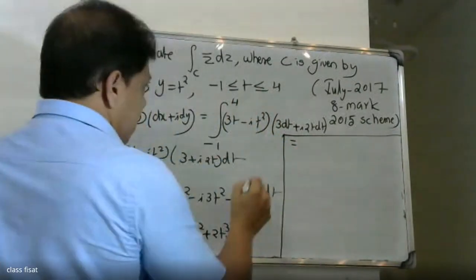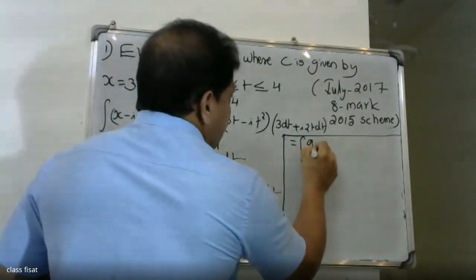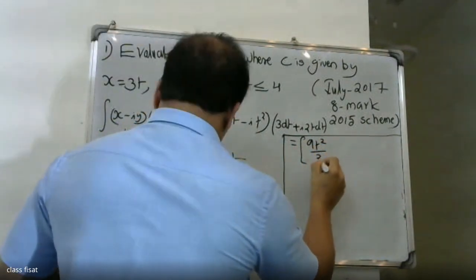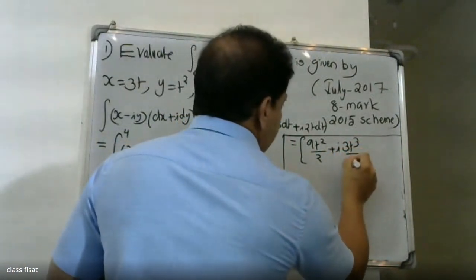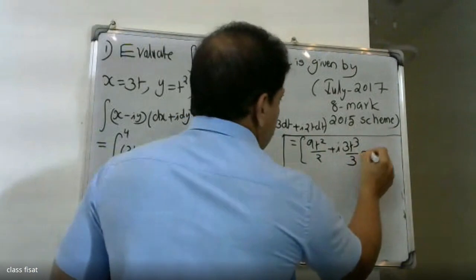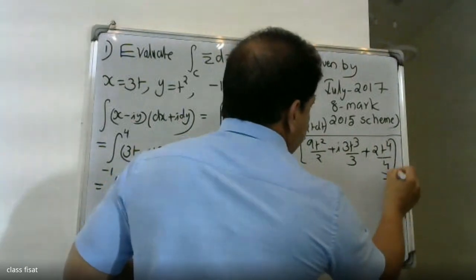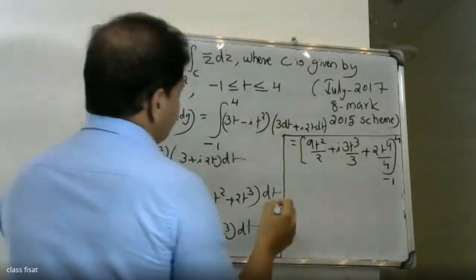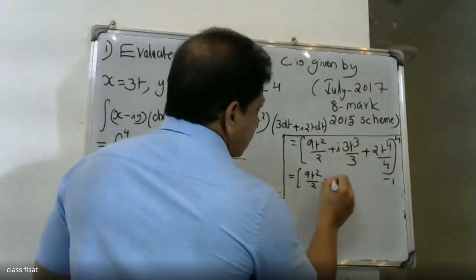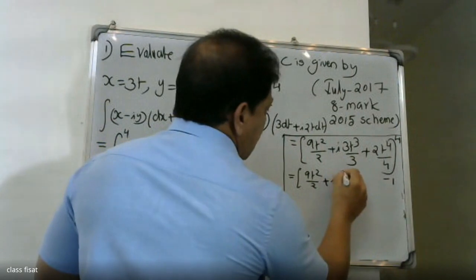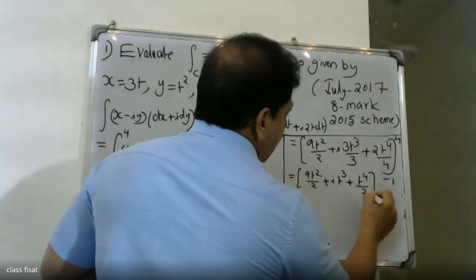This equals the integral from minus 1 to 4 of 9t plus i·6t squared minus i·3t squared, dt. Integrating: 9t squared by 2 plus i times 3t cubed by 3 plus 2t raised to 4 by 4, with lower limit minus 1 and upper limit 4.